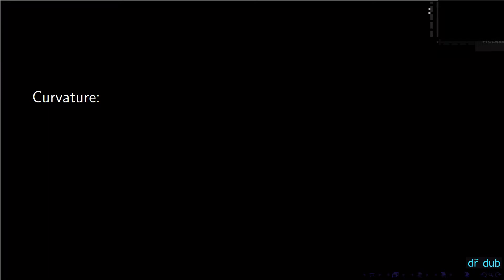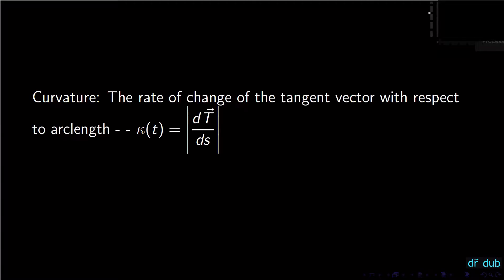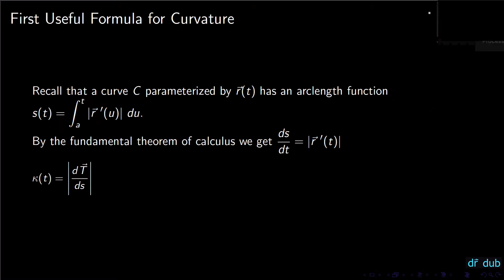Today we're looking at the curvature of a vector function, or the curvature of a space curve. The way we're going to do that is think of curvature as the rate of change of the unit tangent vector with respect to arc length — so how does the curve change with respect to arc length? We're going to take this basic definition and derive two useful formulas.